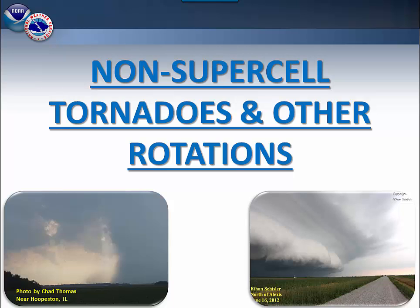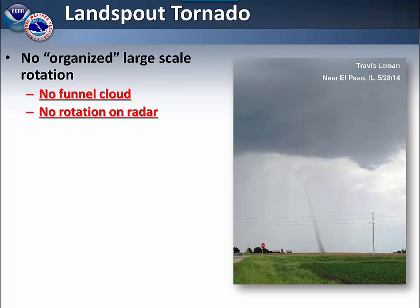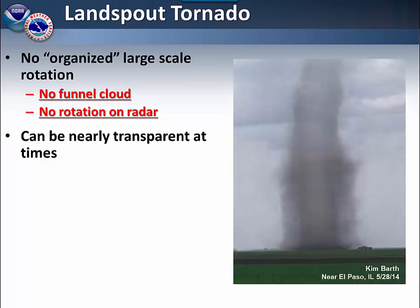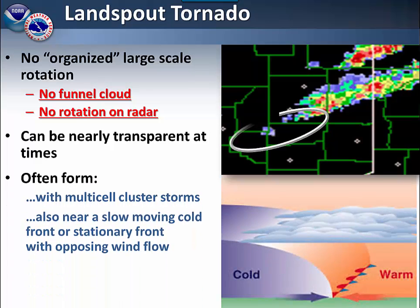Here we will discuss some tornadoes and other rotations that may occur even outside of supercell thunderstorms. One of the more common ones you may see is what we refer to as a landspout tornado. In this particular type of situation there is no organized large-scale rotation. You don't really see any funnel clouds with it, and there aren't really any rotation indicated on radar either. They can be nearly transparent at times. Often they will form with multi-cell cluster thunderstorms and also along a slow-moving cold front or a stationary front with opposing wind flow.